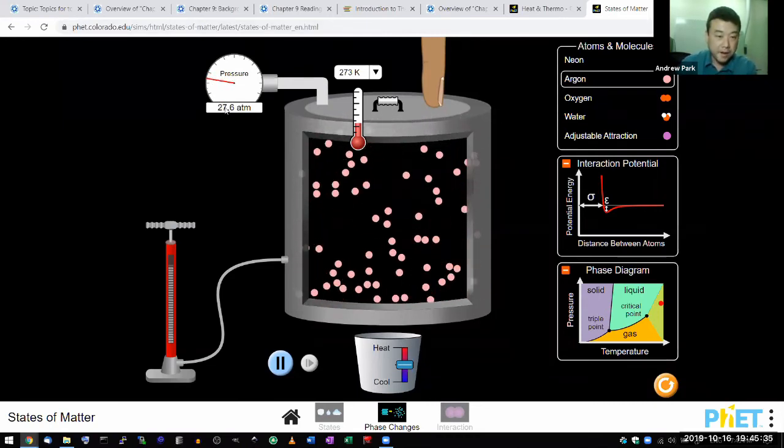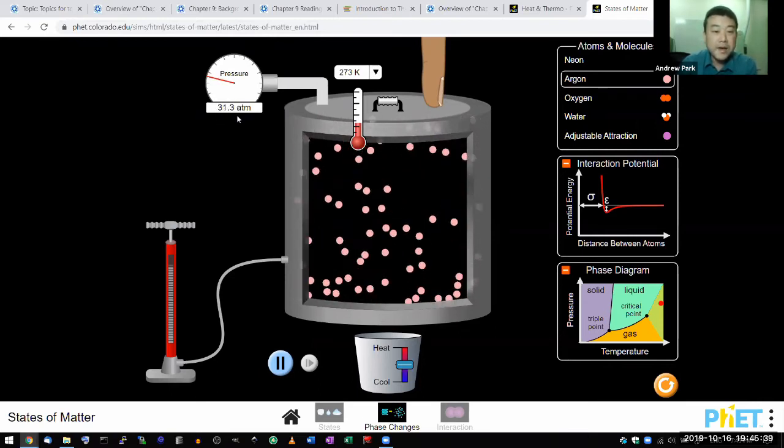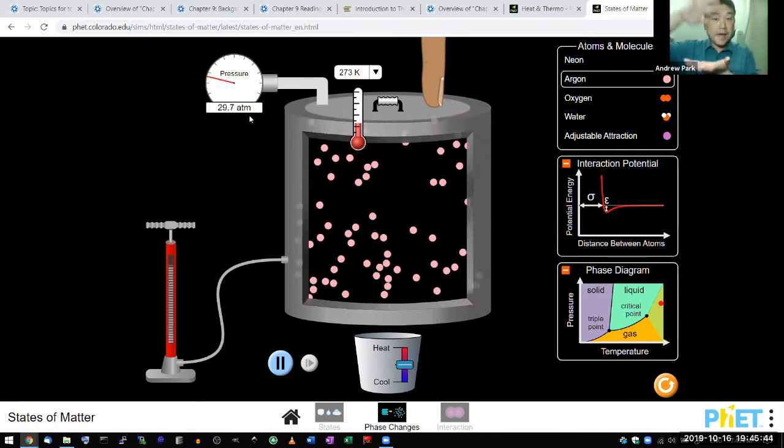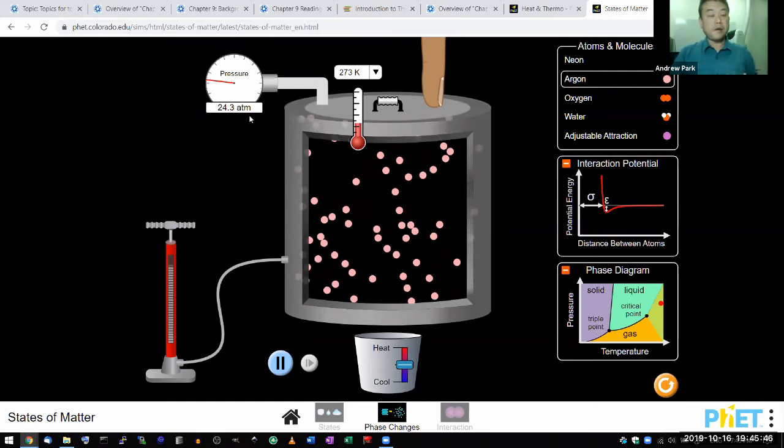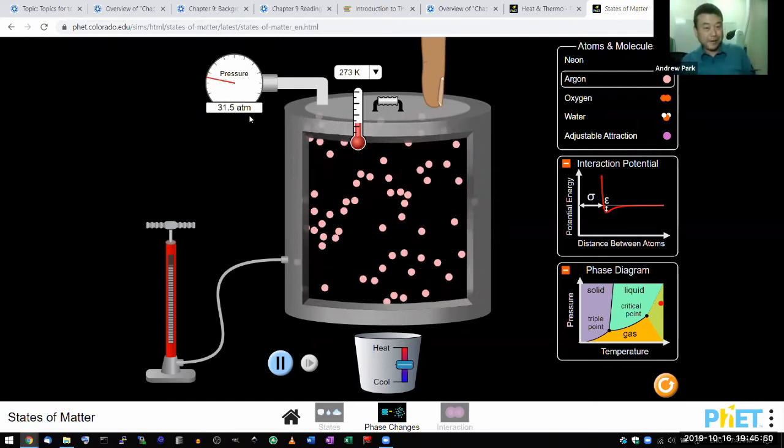Let's call it 30 atmospheres. One atmosphere is pressure equal to that exerted by gas in atmosphere. So it's at 30 times that, which I guess I'll just have to take its word for it.